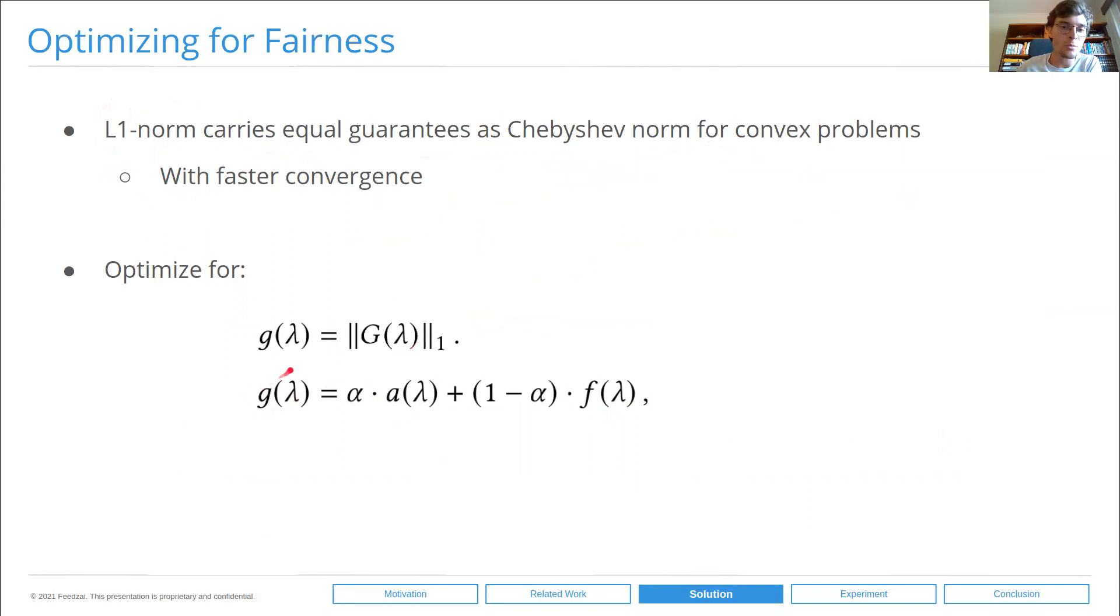And this essentially enables us to use an L1 norm or an L-infinity norm with a low p, which achieves much faster convergence while carrying equal guarantees as the Chebyshev norm for convex problems. We're optimizing the L1 of our previous optimization metric G, weighted by this alpha parameter, which is the relative importance of the accuracy metric.